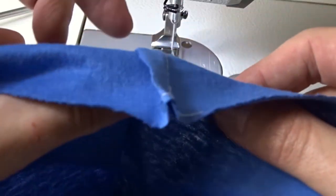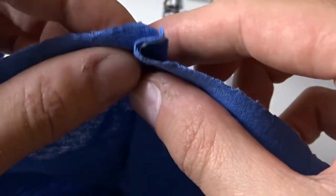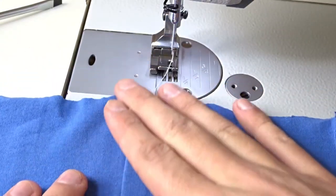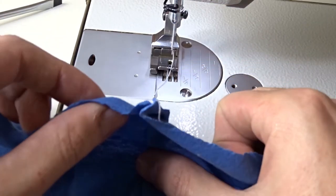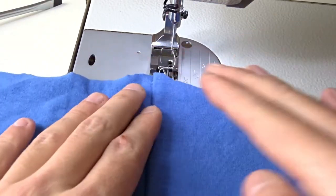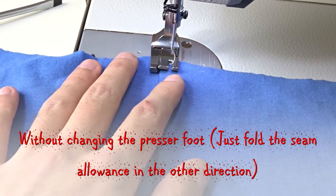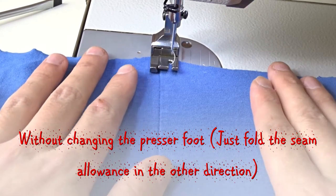You can also use the compensating feet to top stitch. If you are using the left compensating foot you must fold the seam allowance to the right. Or you can rotate the fabric and start sewing from the other end so the top stitch can be on the same side.